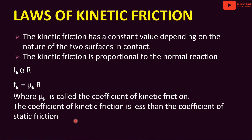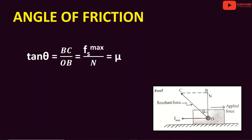The coefficient of kinetic friction is less than the coefficient of static friction. Next is the angle of friction. Consider a body placed on a surface. The normal reaction is N, and we have the limiting friction F. The resultant of these two forces makes an angle theta with the normal. Considering triangle OBC, tan theta equals the opposite side BC divided by the adjacent side OB.